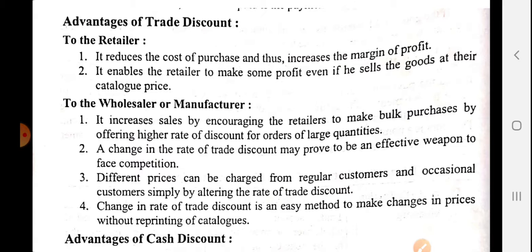Advantage of trade discount for the retailer: First, it reduces the cost of purchase and thus increases the margin of profit. Retailer ko yeh fayda hota hai ki isse cost of purchase kam ho jati hai aur profit ka margin badh jata hai. Second, it enables the retailer to make some profit even if he sells the goods at their catalog price. For example, if the MRP is 100 rupees, the wholesaler provides it at 80 or 90 rupees, and the retailer sells it at 100 — earning 10 rupees as profit.